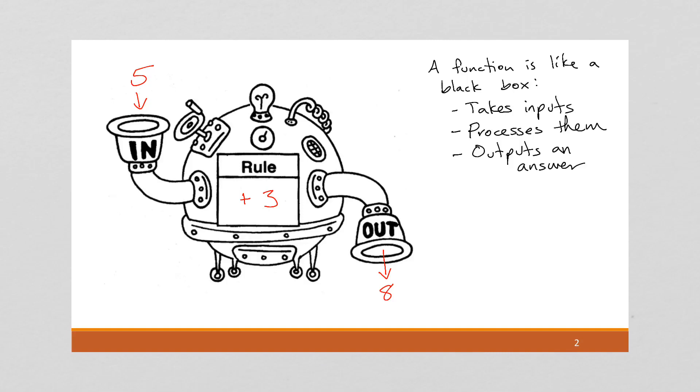All right, we can do this in all sorts of ways, and our rules can be quite complicated. We pass in a 10, and our rule is minus four, then we're going to get a six out. Right? Pretty straightforward. And we're used to functions involving numbers.